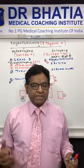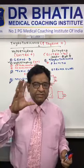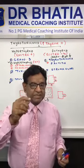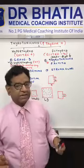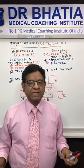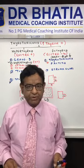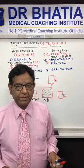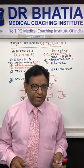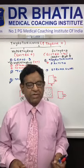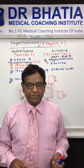Thyrotoxicosis means excess of thyroid hormone. Graves' disease is the autoimmune disorder with generalized enlargement of the gland, eye signs, skin signs, and hyperthyroid. As far as euthyroid is concerned, no enlarged gland and the source of hormone is from somewhere else. Thank you very much for watching. You can contact me on Messenger for any queries or any topic you want to listen to.